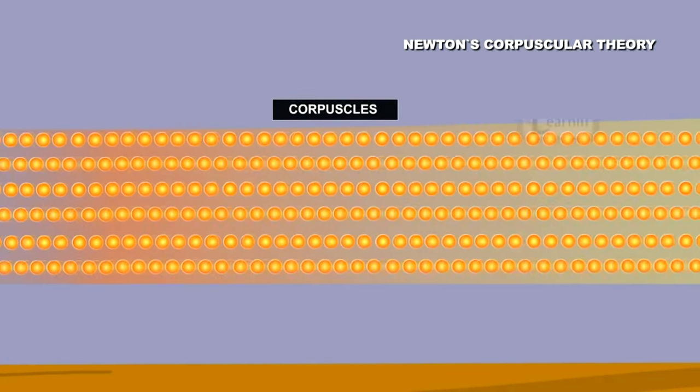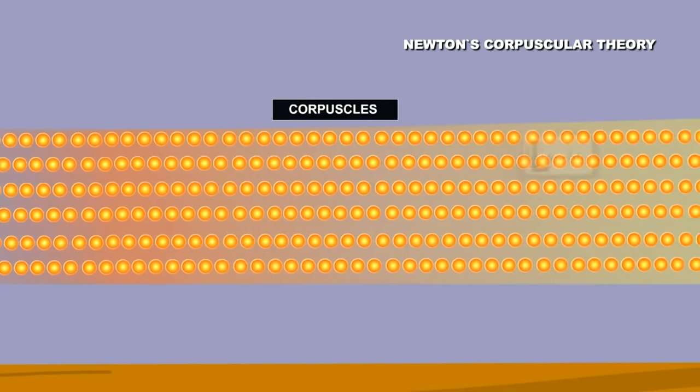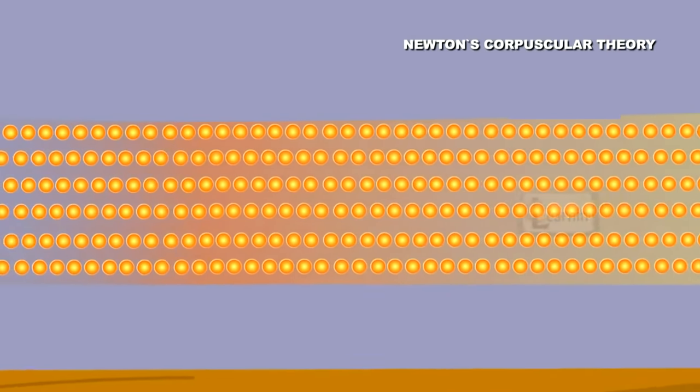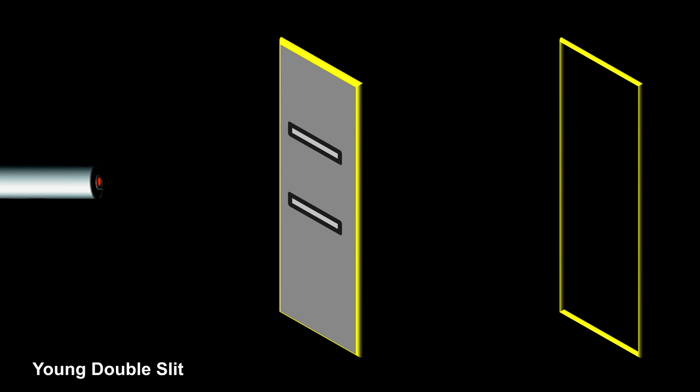Newton thought light was a particle because he never witnessed light diffraction. The wavelength of light was too small for the experiments he ran. For decades, his view was never questioned. But in the early 1800s, that changed based on experiments by Thomas Young.